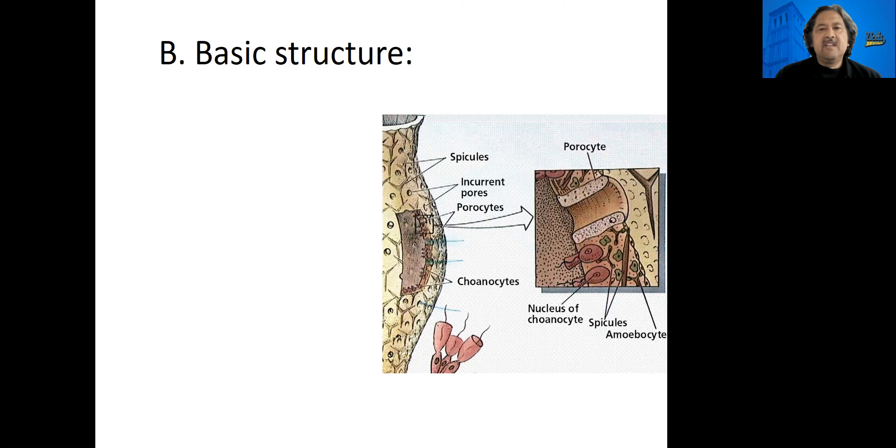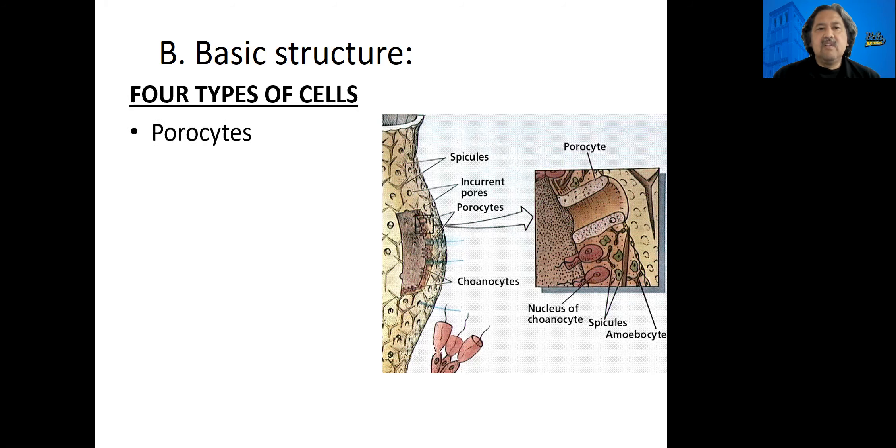Now we take a look at the basic structure of the sponge. From a cellular point of view, there are four types of cells. The first cell is called the pore cell or the porocyte, and it creates the pore in the body of the sponge.